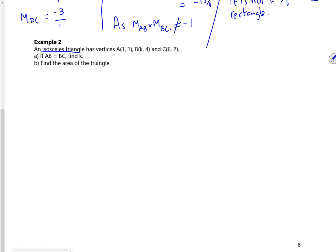It says an isosceles triangle has vertices at where AB is equal to BC. So let's have a look at the coordinates. We've got 1, 1. Now AB is equal to BC. So if I draw it as AC is the base, and B is going to be up here somewhere.